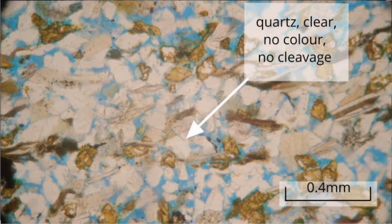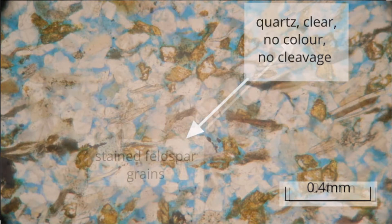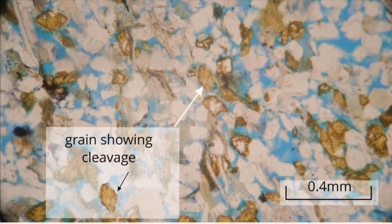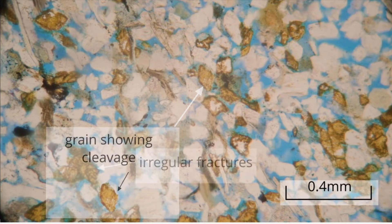Quartz is recognised by its lack of colour and absence of cleavage. It shows no pleochroism, which means that it doesn't change colour as the stage is rotated. Feldspar grains may be identified in plain polarised light because they are either stained yellow or have a cloudy or turbid appearance. These grains are not pleochroic. Some feldspar grains show a weak cleavage parallel to the long grain edges.